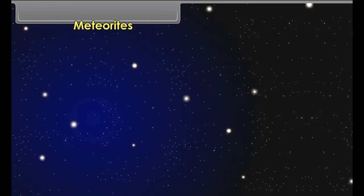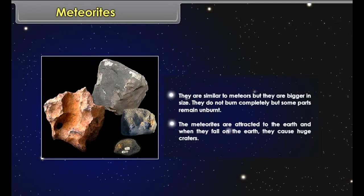Meteorites are similar to meteors but they are bigger in size. They do not burn completely — some parts remain unburnt. The meteorites are attracted to the Earth, and when they fall on the Earth, they cause huge craters.